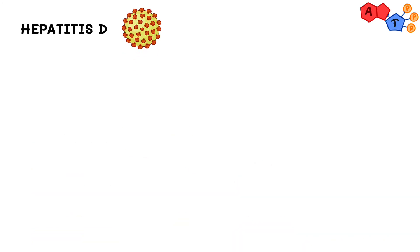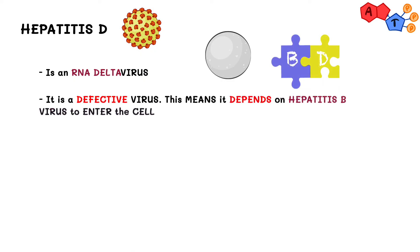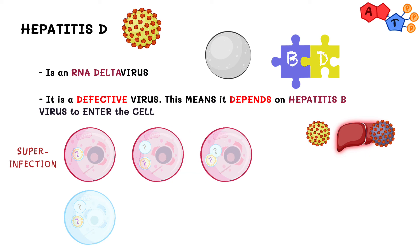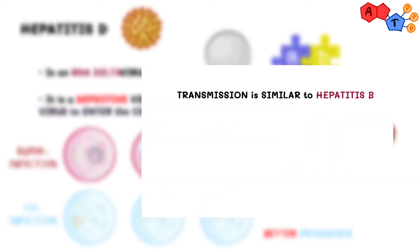Next is hepatitis D, also an RNA delta virus. The most important thing to remember is that it's a defective virus — it depends on hepatitis B to enter liver cells, so hepatitis D infection requires the patient to also have a hepatitis B infection. There are two ways this can happen: superinfection, where the patient gets hepatitis B and then develops hepatitis D on top of it — this has the worst prognosis — and co-infection, where both infections occur at the same time, which has a better prognosis.